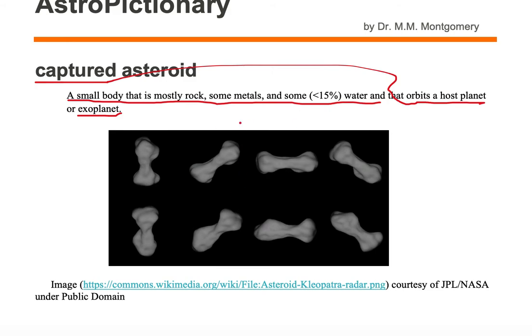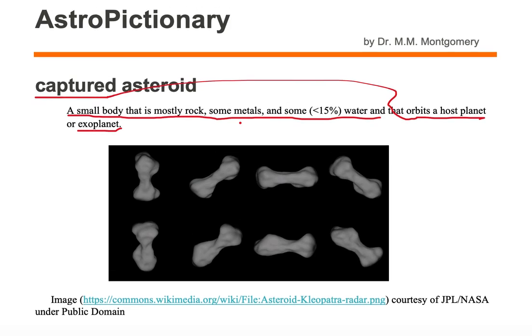Asteroids that fall in towards a planet or exoplanet but don't land on it and can't leave the gravitational pull of the planet or exoplanet are referred to as captured asteroids.